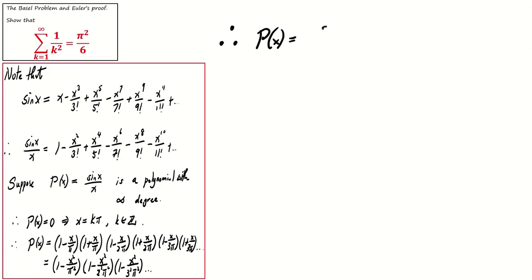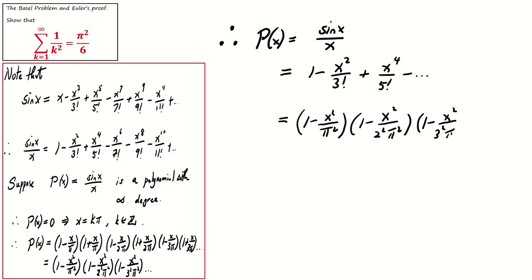That is, sin x over x equals 1 minus x squared over 3 factorial plus x to the power 4 over 5 factorial, and so on. It is also equal to (1 minus x squared over pi squared) times (1 minus x squared over 2 pi squared) times (1 minus x squared over 3 pi squared), and so on. Expand all these factors, and we obtain a series.